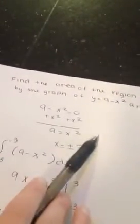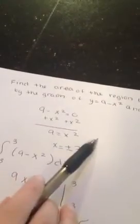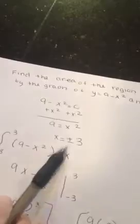First, we set 9 minus x squared equal to 0. Moving x squared to the other side, we get 9 equals x squared, which gives us x equals plus or minus 3.